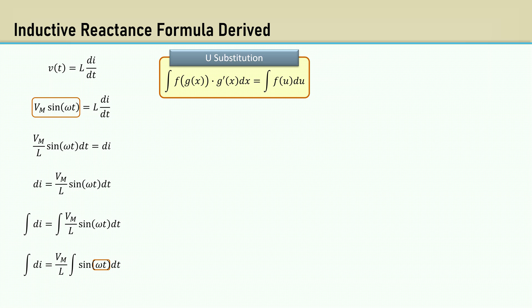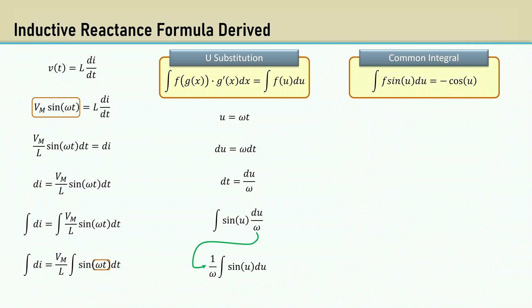U is omega t. Then take the derivative, rearrange to solve for dt, and bring back the sine of u. Bring the constant 1 over omega out front. The common integral of sine is negative cosine. Integrating this gives 1 over omega times negative cosine omega t.